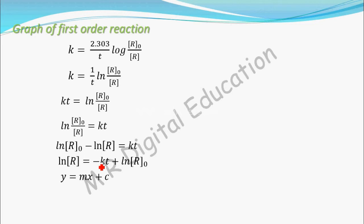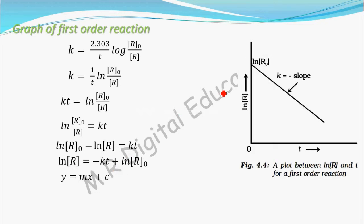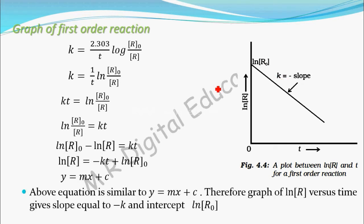You will get like this: graph of ln [R] versus time you will get like this with intercept on y-axis as ln [R]0 and slope equal to minus k. You will get graph like this.